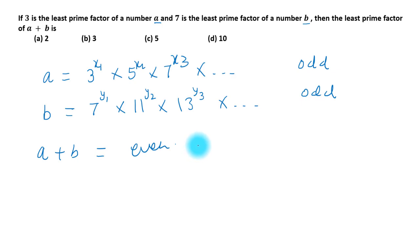Kisi bhi even number mein jo least prime factor hota hai wo kaun sa hota hai? 2. Is tarah se option a correct hai.